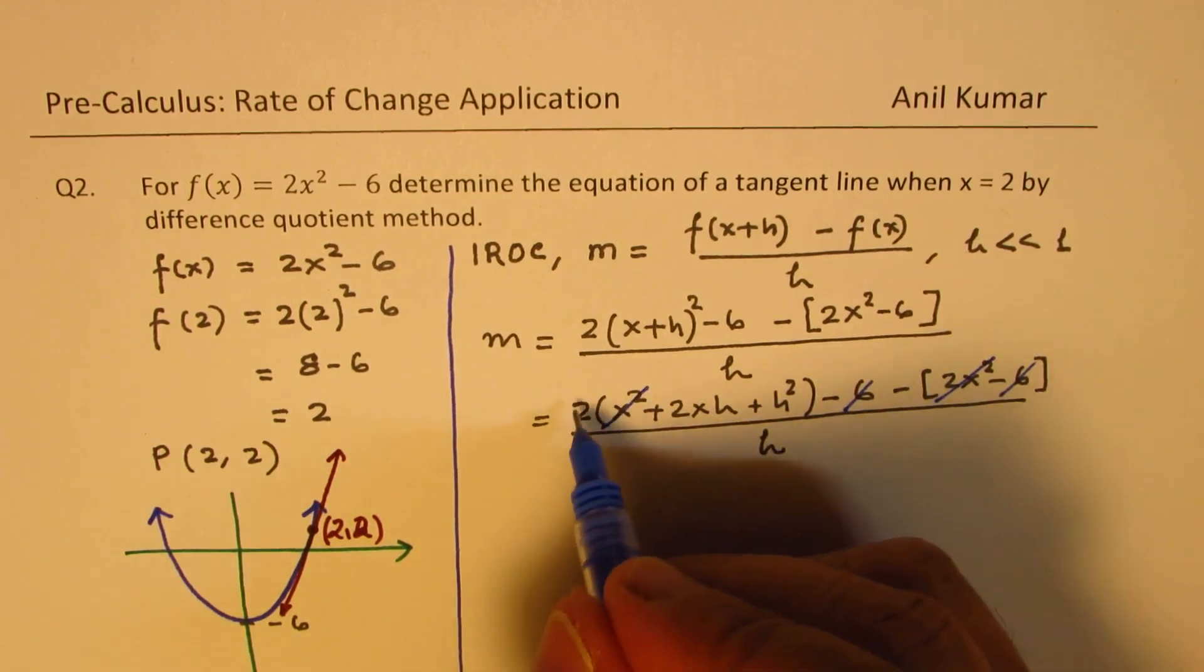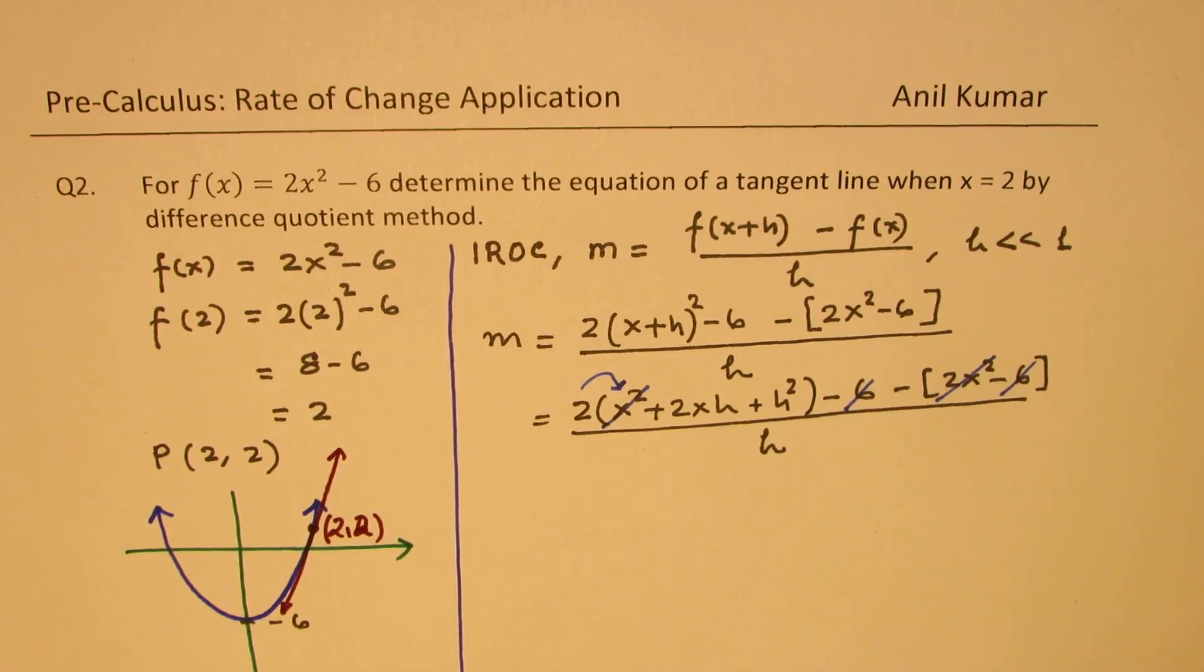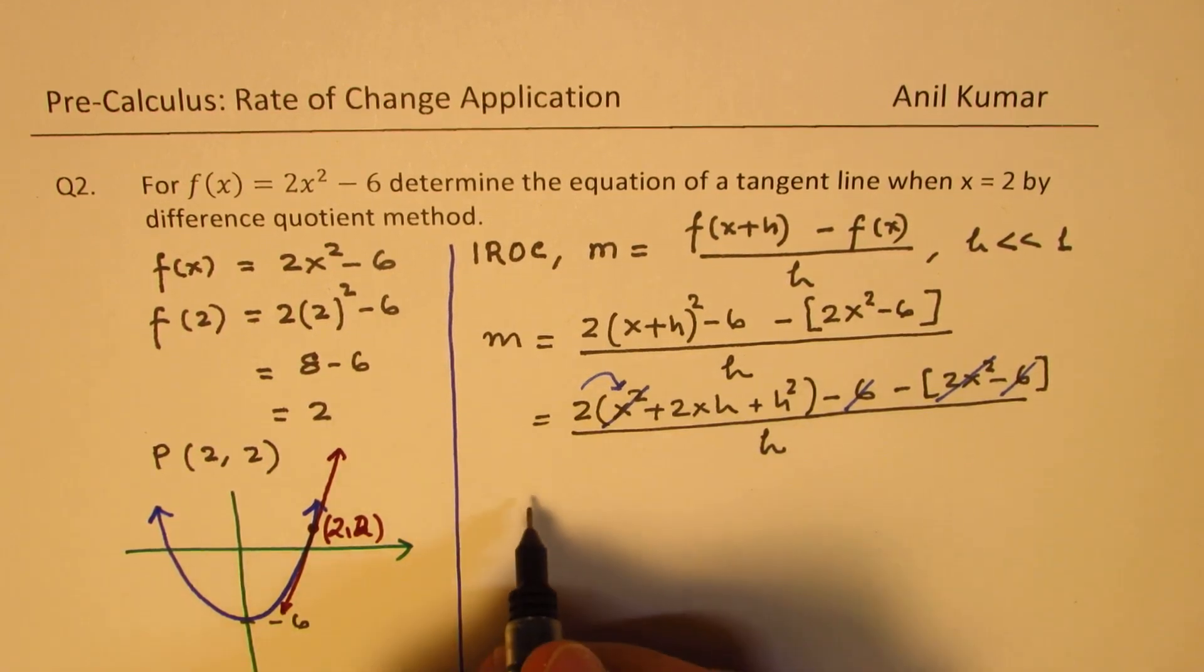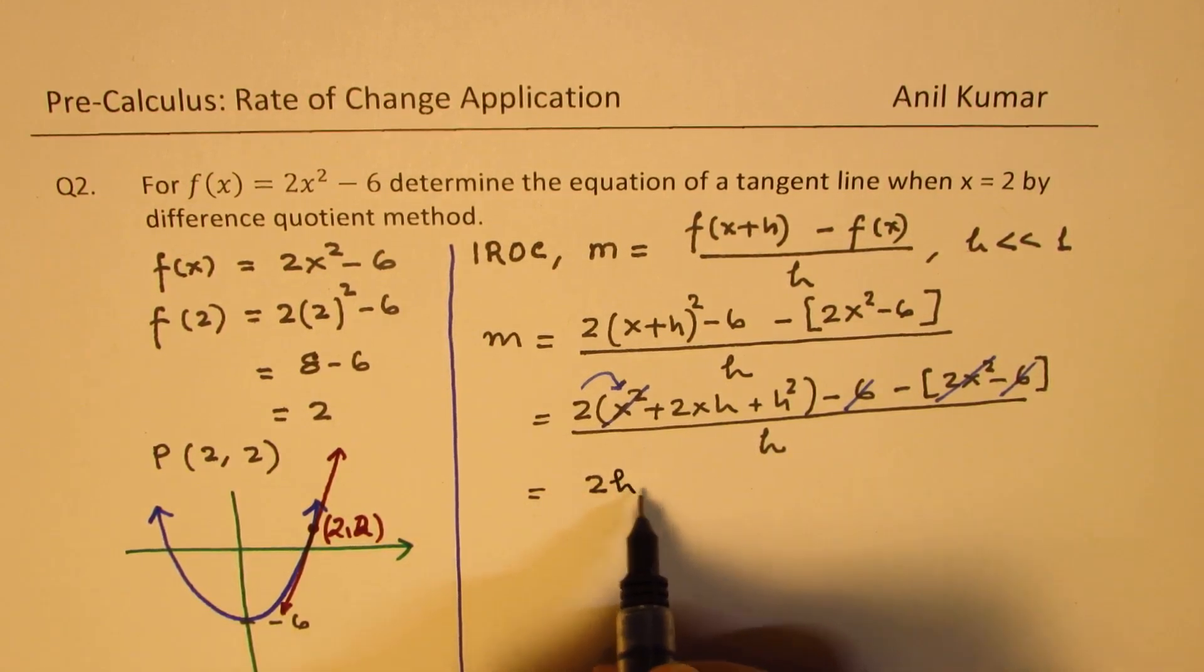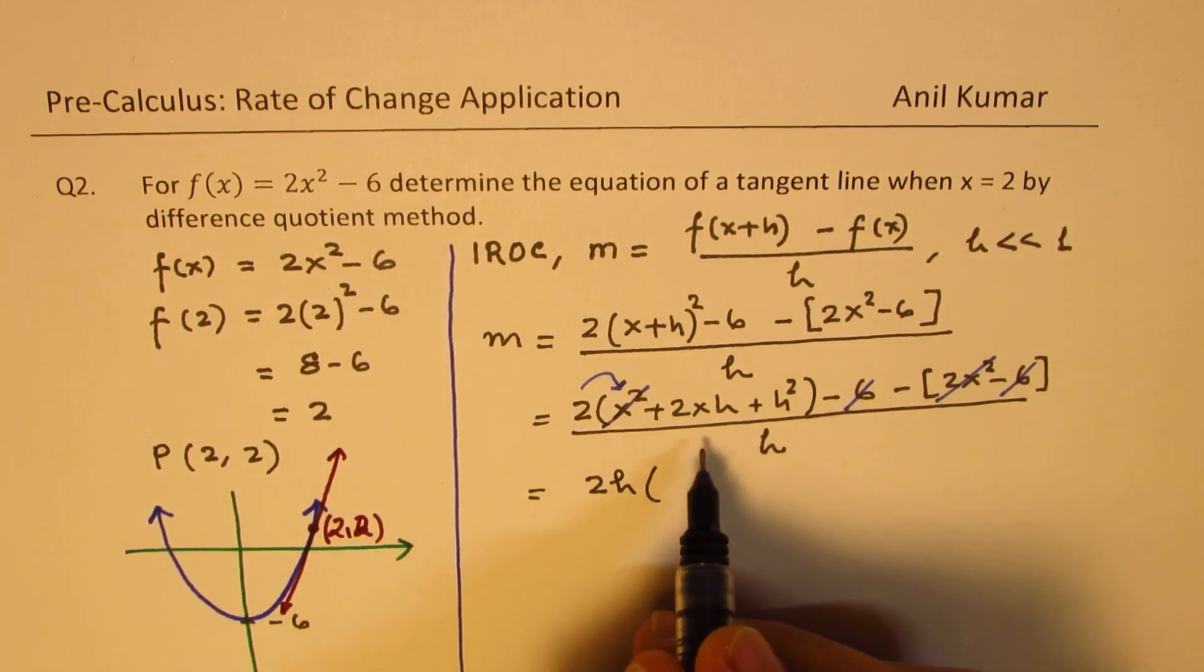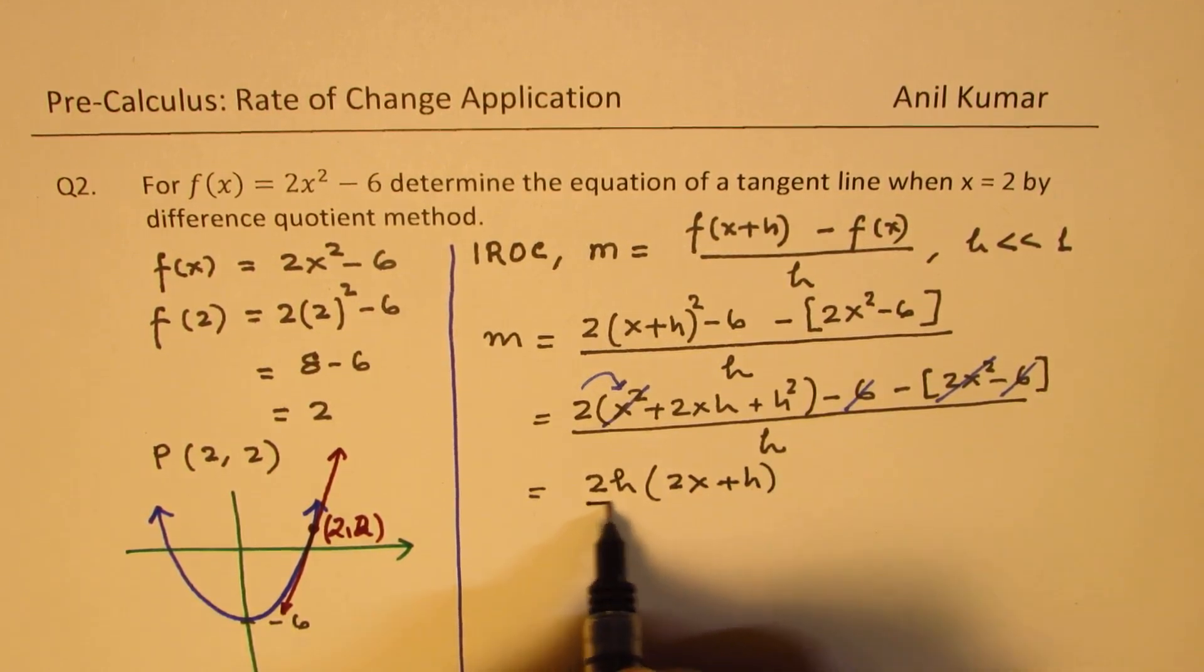So 2x² cancels with this, because when you multiply, it becomes 2x². Now, from this, h could be taken out, we already have two outsides, so we have 2h, and we could write this as 2x + h, over h.